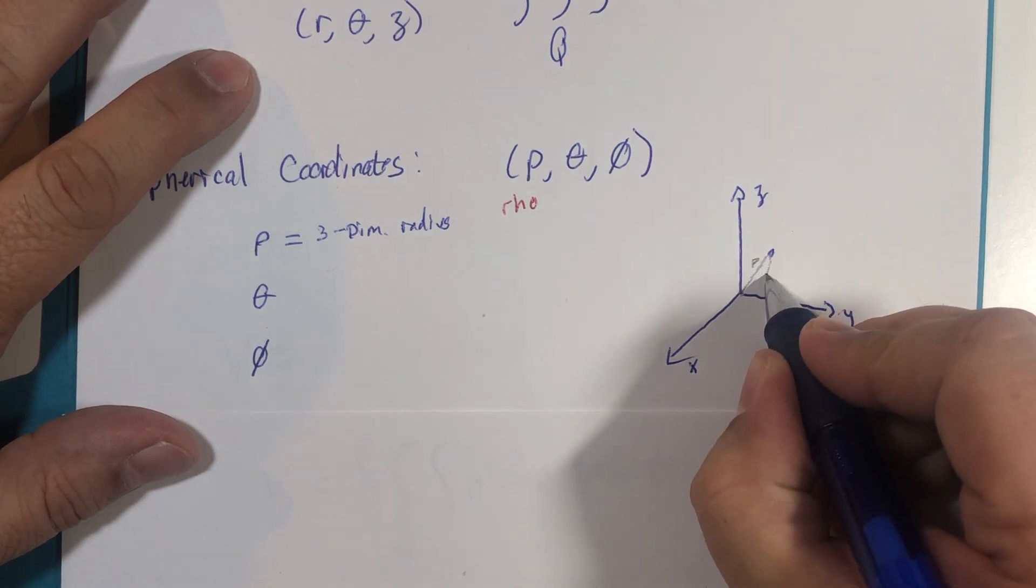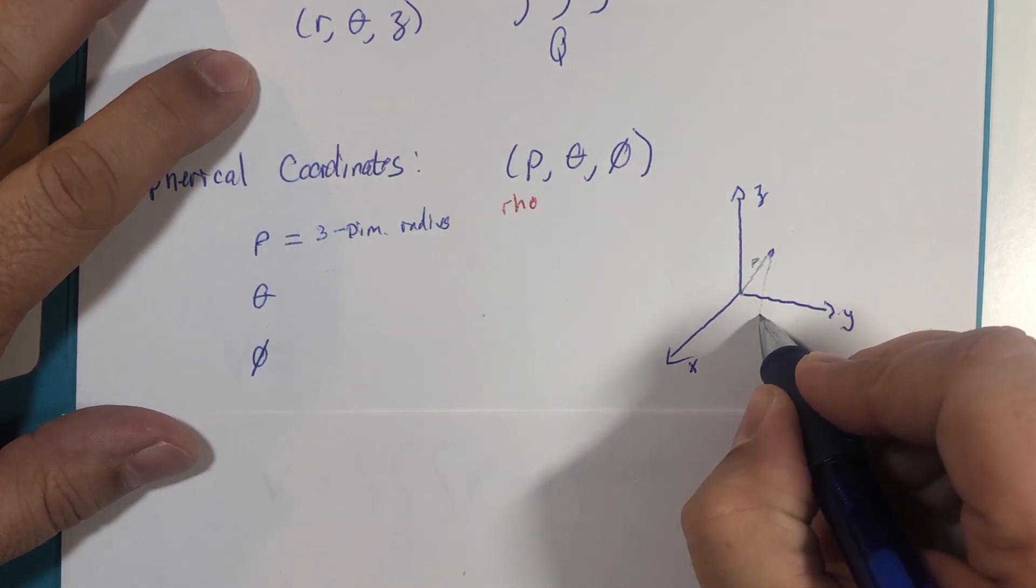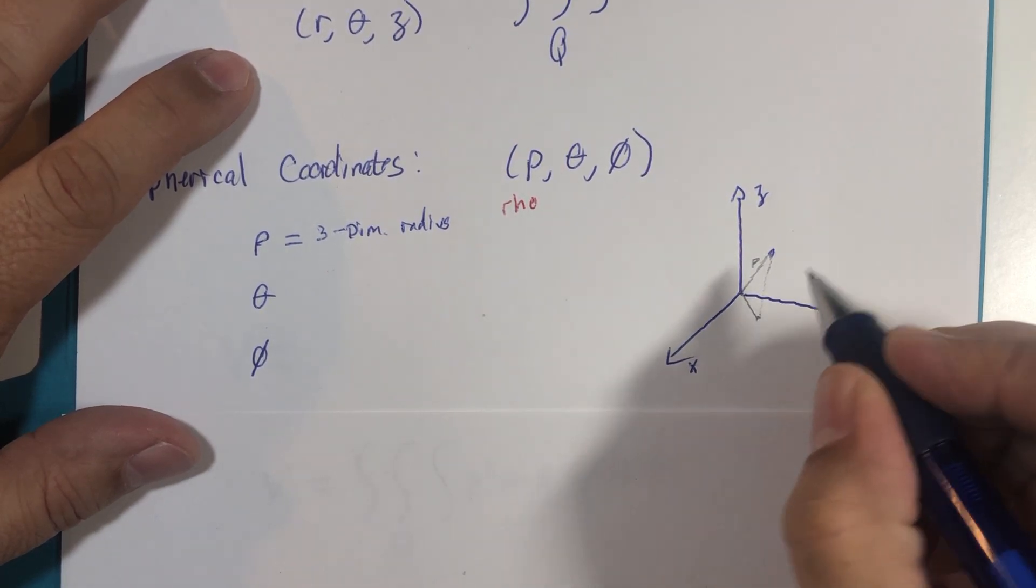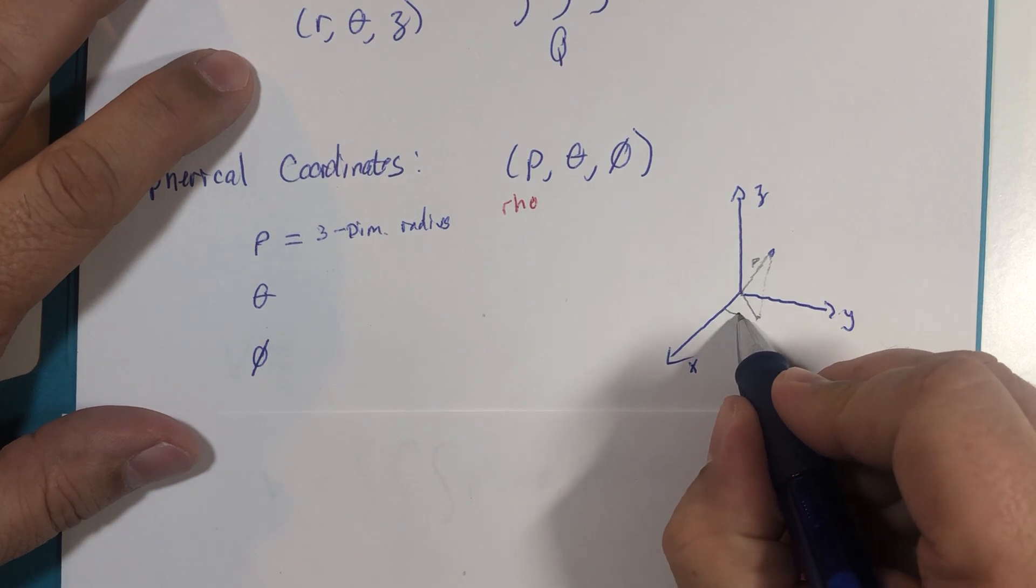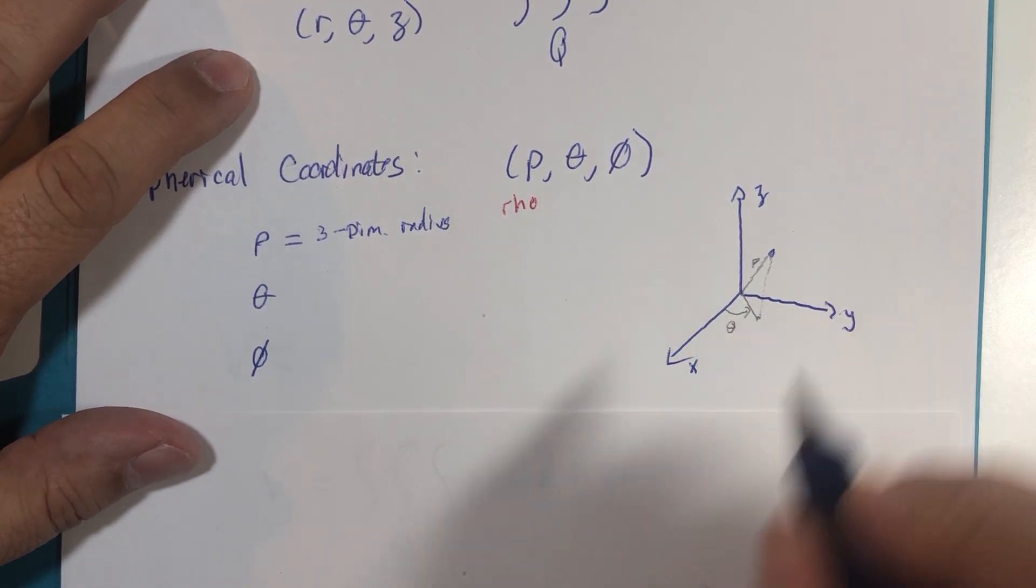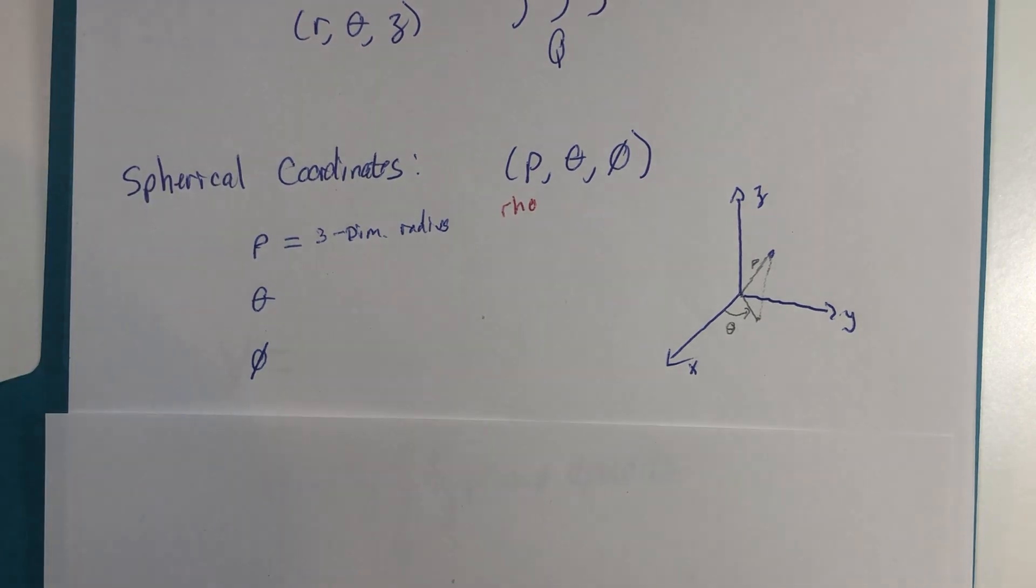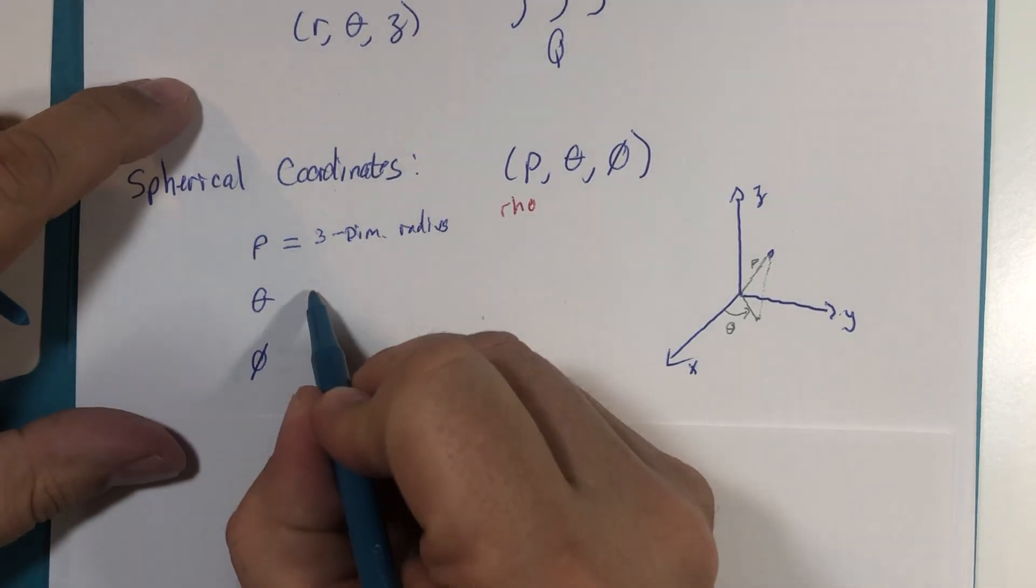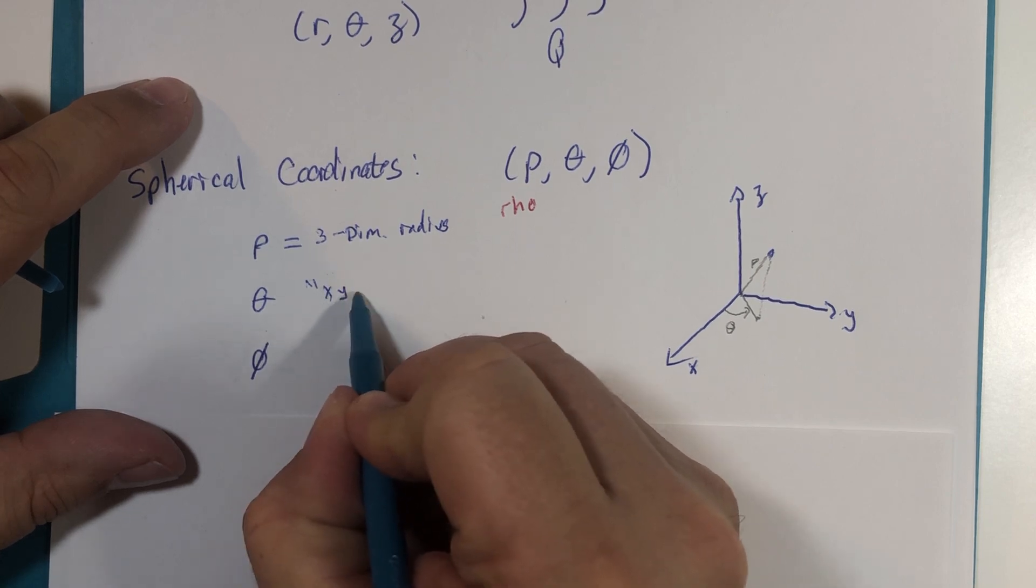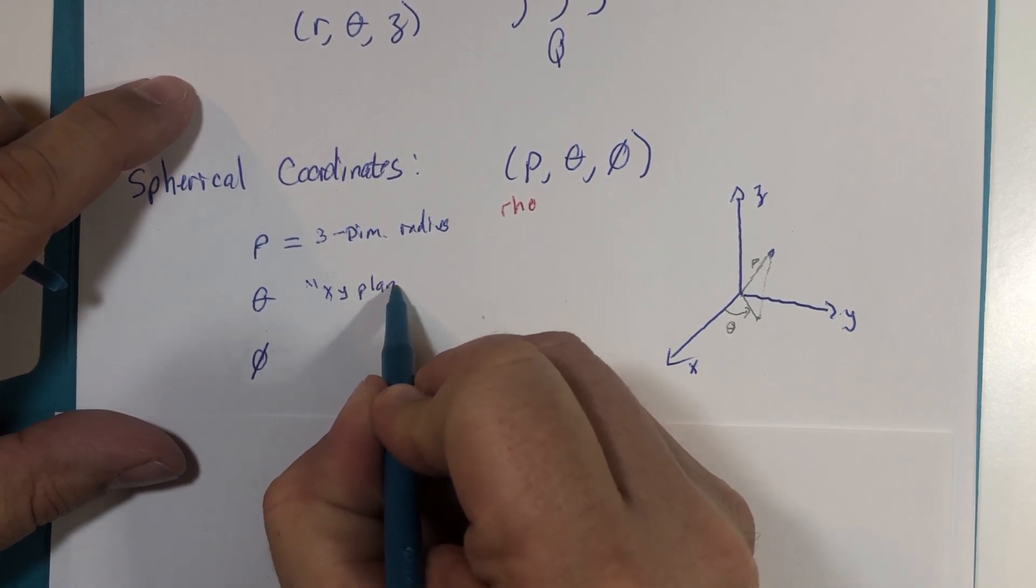This point is directly above a location in the xy plane. That right there is our theta, so I'm just going to put a little note here: this is in the xy plane.